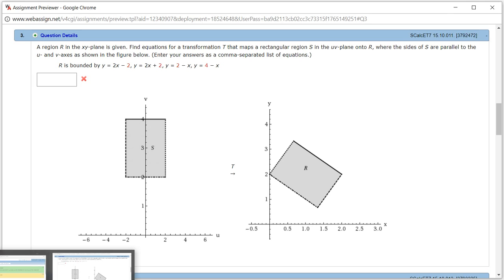Let's look at hallmark 15.10, problem number three. So we want to come up with the transformation that transforms this rectangular region to another rectangular region, but it looks like it's slanted. Let's do that.